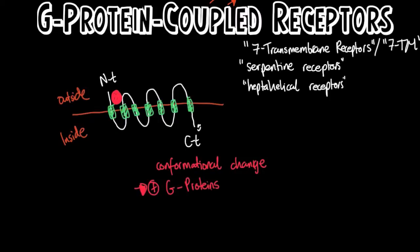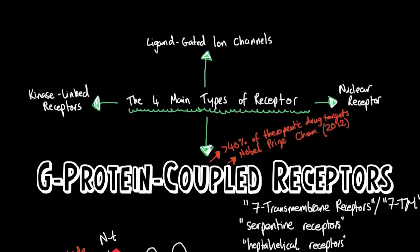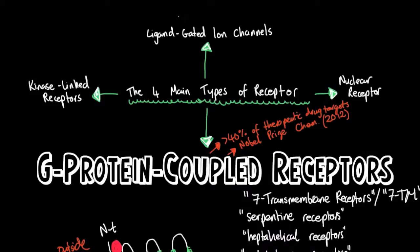Because G-protein-coupled receptors pass on the message via the use of a messenger molecule, they have another name — this is the fifth name I'm going to give you. This is actually the most important other name for GPCRs, and this name is metabotropic receptors. This word is most easily understood in comparison to the other name for ligand-gated ion channels, which is ionotropic receptors.